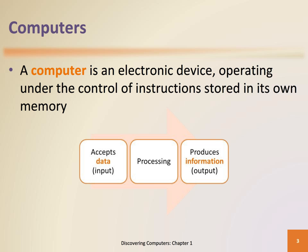The electronic device is computer hardware and the instructions are computer software. The computer system is able to accept data (input), manipulate or process data, and produce information (output), and store results.